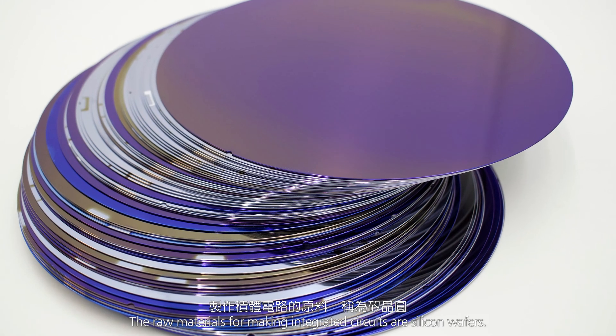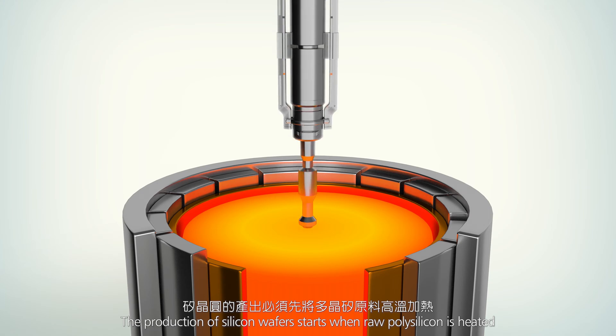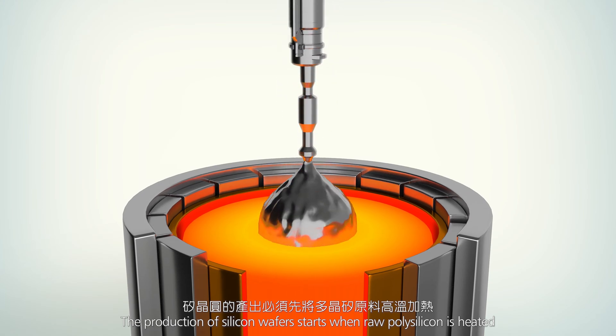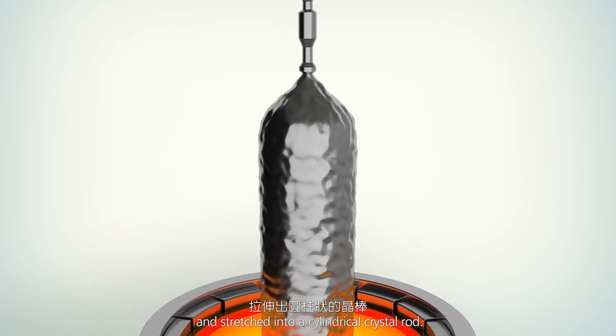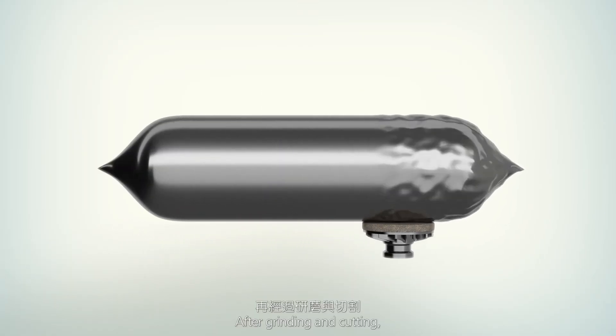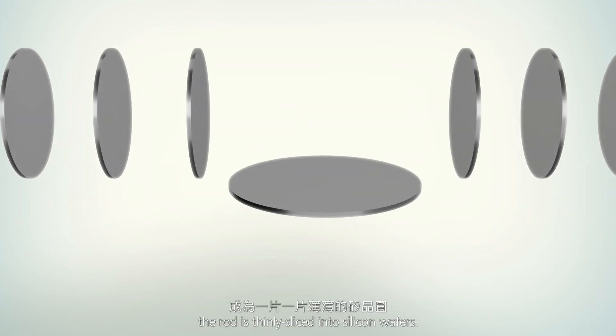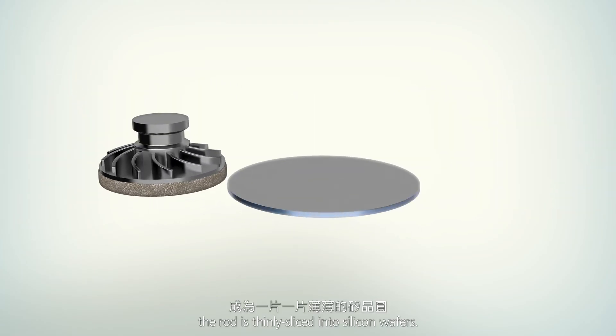The raw materials for making integrated circuits are silicon wafers. The production of silicon wafers starts when raw polysilicon is heated and stretched into a cylindrical crystal rod. After grinding and cutting, the rod is thinly sliced into silicon wafers.